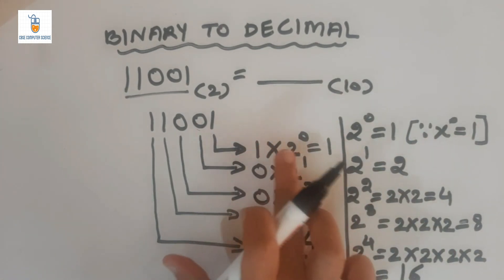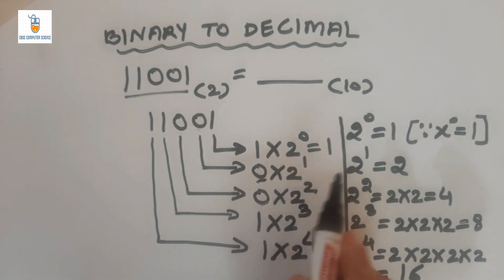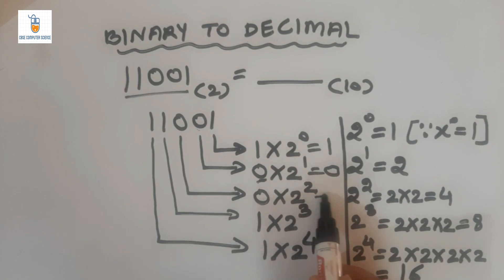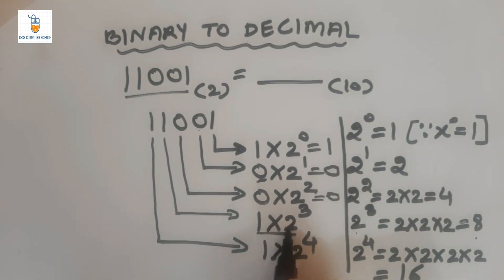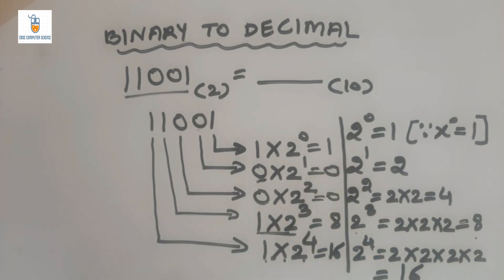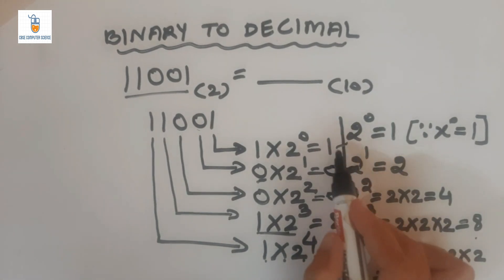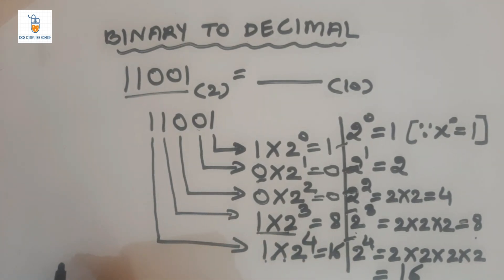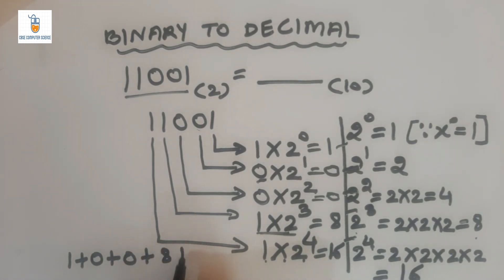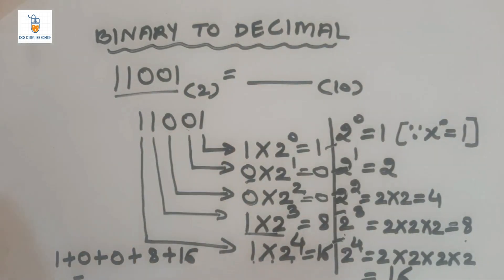So 1 into 2 raised to 0 becomes 1 into 1, which is 1. 0 into anything is 0, so the next two terms are 0. Then 1 into 2 raised to 3 — since 2 cubed is 8 — gives 8. And 1 into 2 raised to 4 — since 2 to the 4th is 16 — gives 16. Now we add all the values obtained: 1 plus 0 plus 0 plus 8 plus 16. After adding, we get 1 plus 8 plus 16, which is 25.